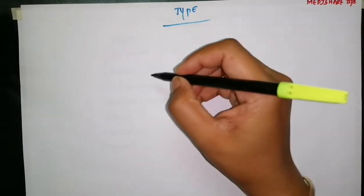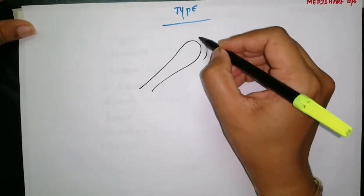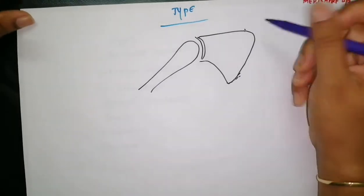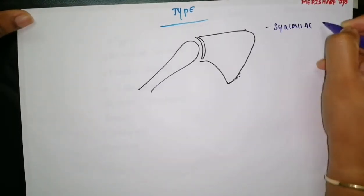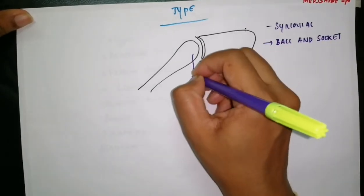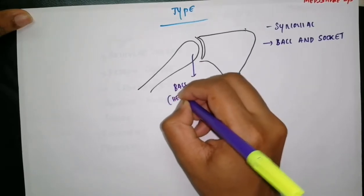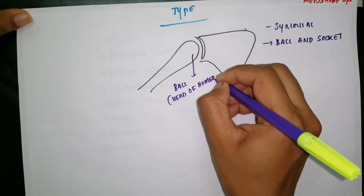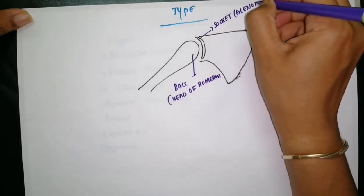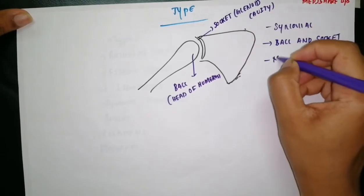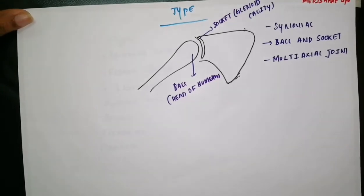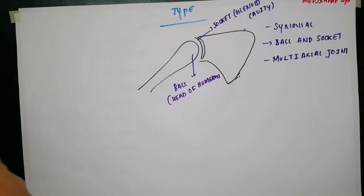The head of humerus articulates with the glenoid cavity of the scapula to form the shoulder joint. It is a synovial joint and it is a ball and socket type of joint, where the ball is formed by the head of humerus and the socket is formed by the glenoid cavity. It is also a multi-axial joint.